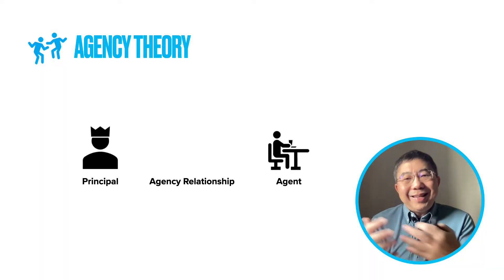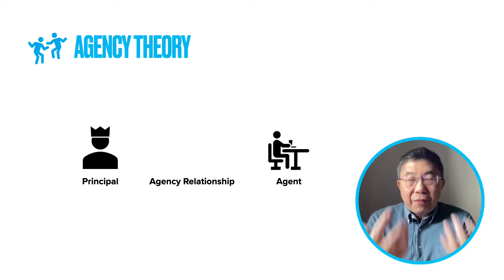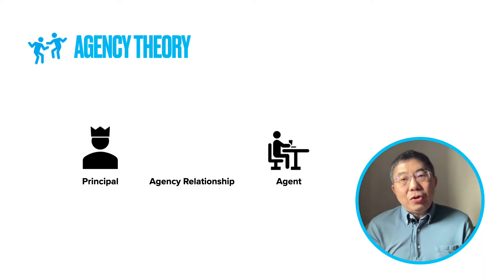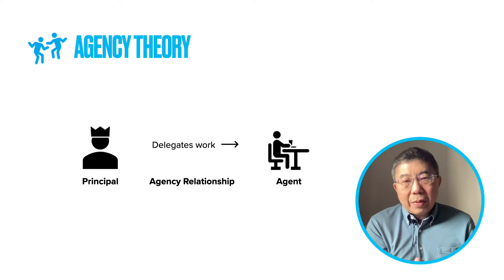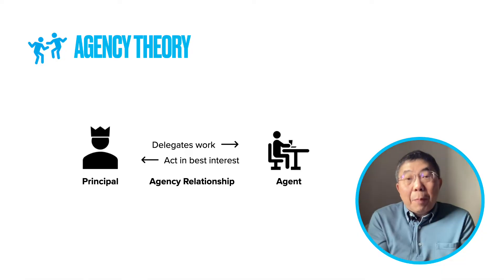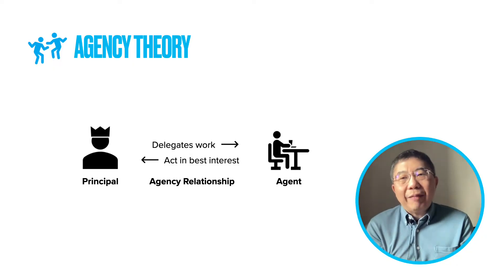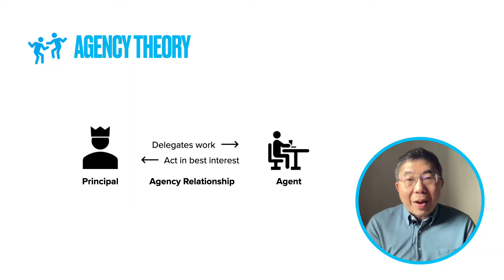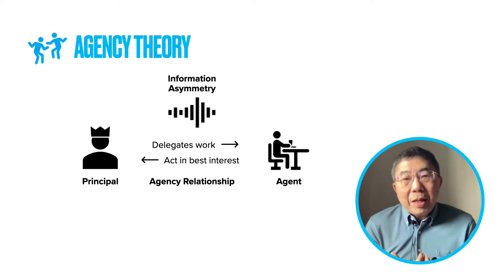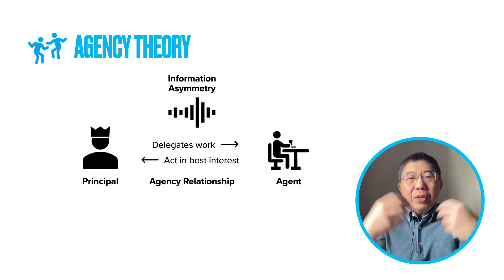Agency theory describes the relationship between the principal and the agent. The principal is typically the one with the funding — they invest in the business and hire the agent to run the business on their behalf. The principal delegates work to the agent, and in return the agent is expected to run the business well and serve the benefit of the principal. However, because the agent runs the business on a day-to-day basis, the agent will have more information about the business than the principal. We call this imbalance of information asymmetry, and this information asymmetry results in some problems.